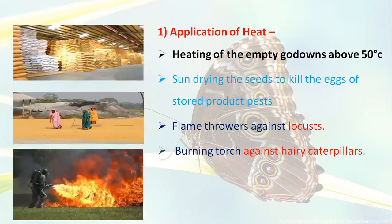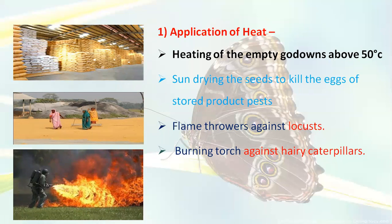The first practice is the application of heat. Consider godowns where harvested food material and grains are stored. Before storage, the empty godowns need to be heated properly, because some pests are hidden inside gunny bags, inside the godowns, or in materials used for storage. We need to properly heat them within a certain temperature range to prevent further infestation.